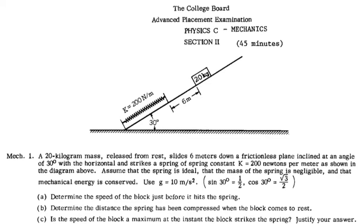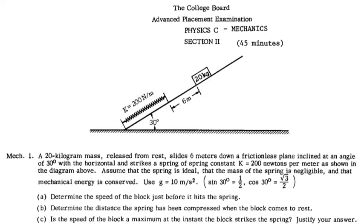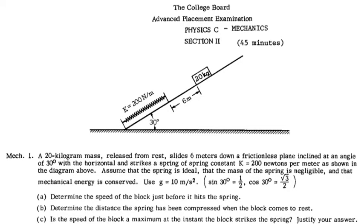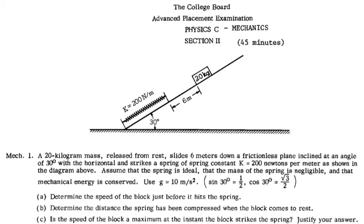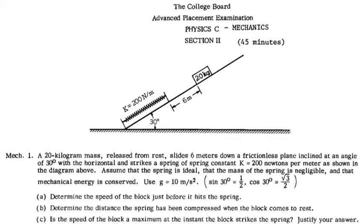A 20 kg mass released from rest slides 6 meters down a frictionless plane inclined at an angle of 30 degrees to the horizontal, and strikes a spring of spring constant k equals 200 newtons per meter as shown in the diagram above. Assume that the spring is ideal, that the mass of the spring is negligible, and the mechanical energy is conserved.